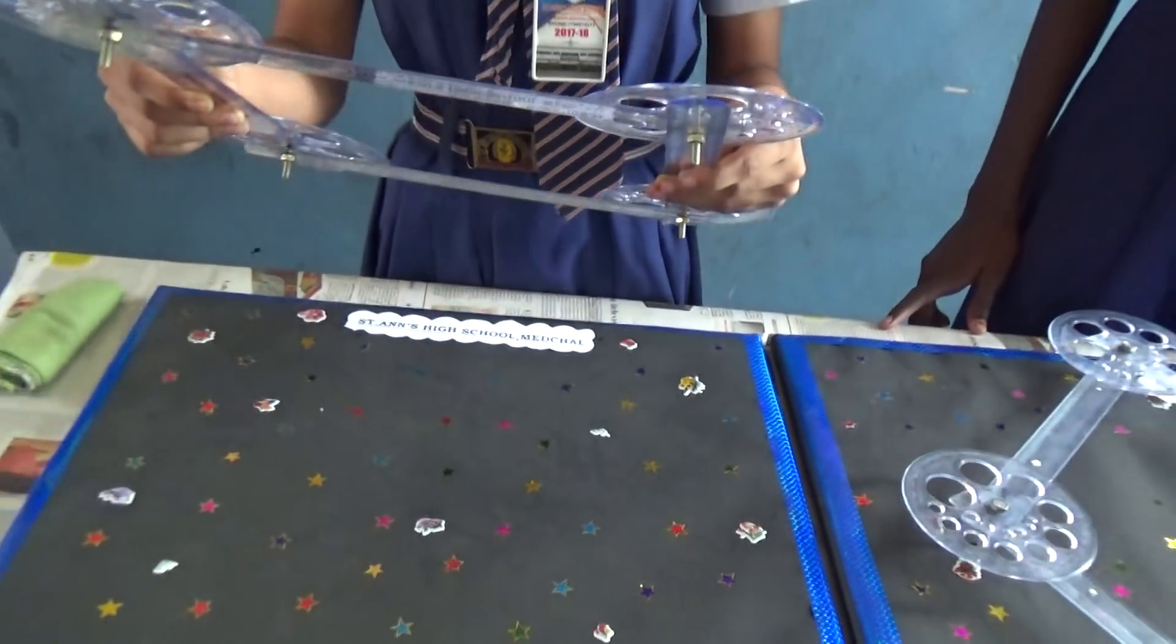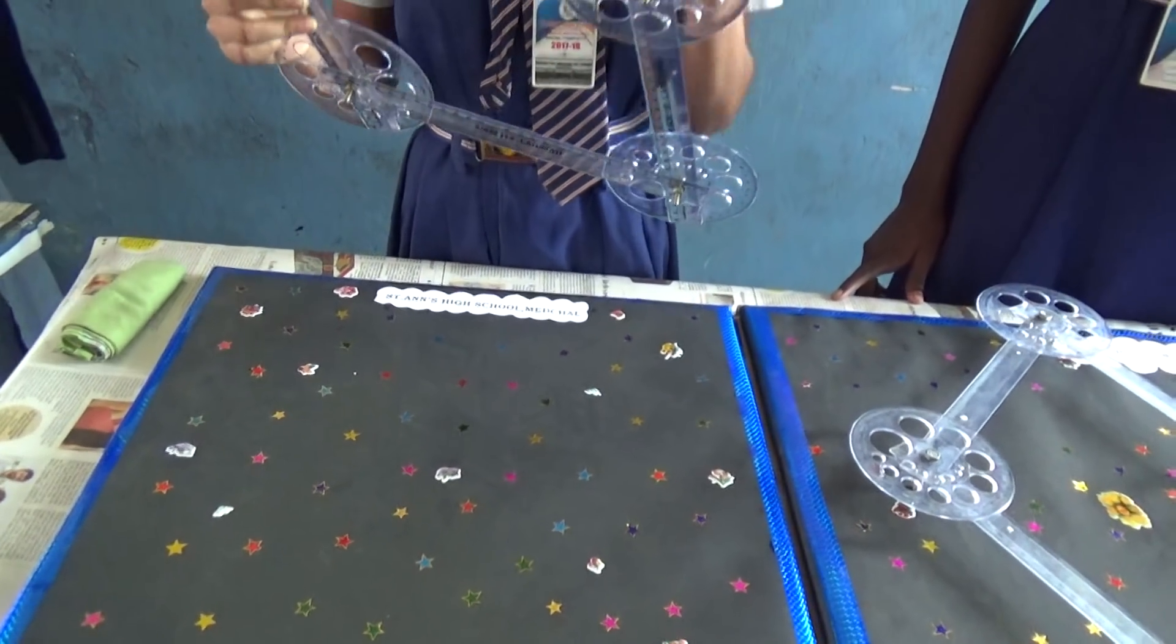I am going to explain about quadrilaterals. In a quadrilateral, it is a part of geometry. The first one is parallelogram.